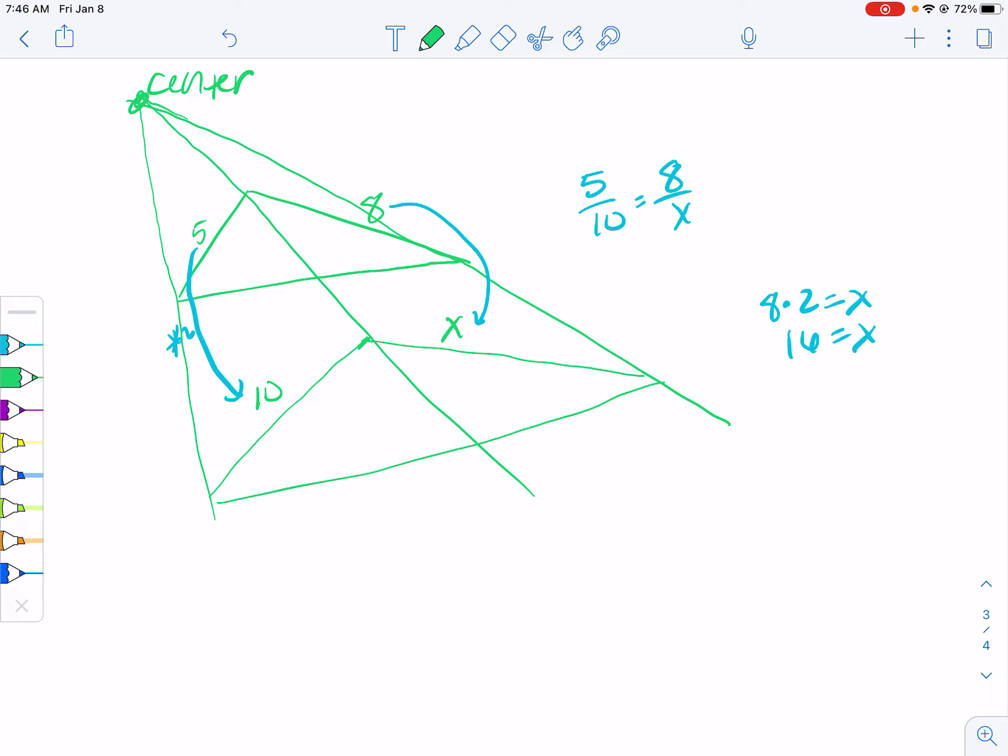Now, notice if we solve this proportion, remember you can cross multiply. So here would be 80 equals 5x. So then we would divide by 5. So x is 16.